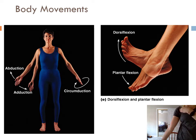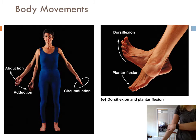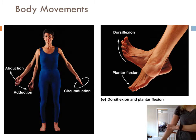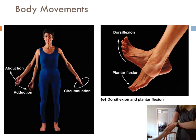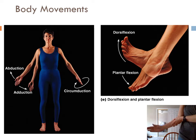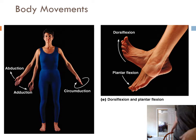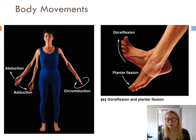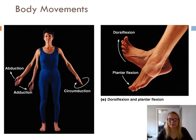At my shoulder, I can do abduction and adduction. I cannot do that action at my elbow — I can only do flexion and extension there. That's that monaxial joint we saw back in chapter five. I can't make my elbow go adduction and abduction, but I can with my wrist and with my fingers, moving those in that plane. I can do it with my leg too, but we can't really do that along our spine.